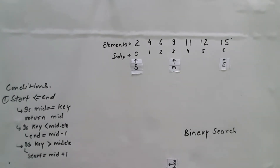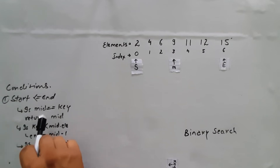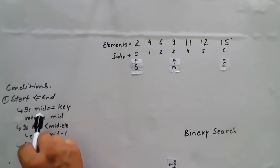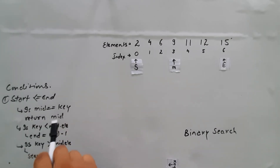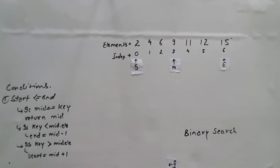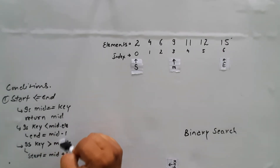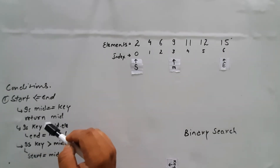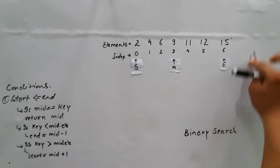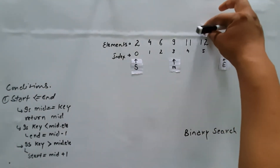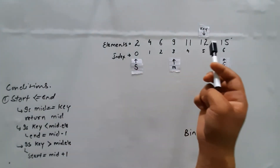So there is a condition: if the element at the mid equals the key that we are looking for, then just return it. There are two other conditions as well. Let's say we are going to search for an element which is 12. This is the element we are looking for.